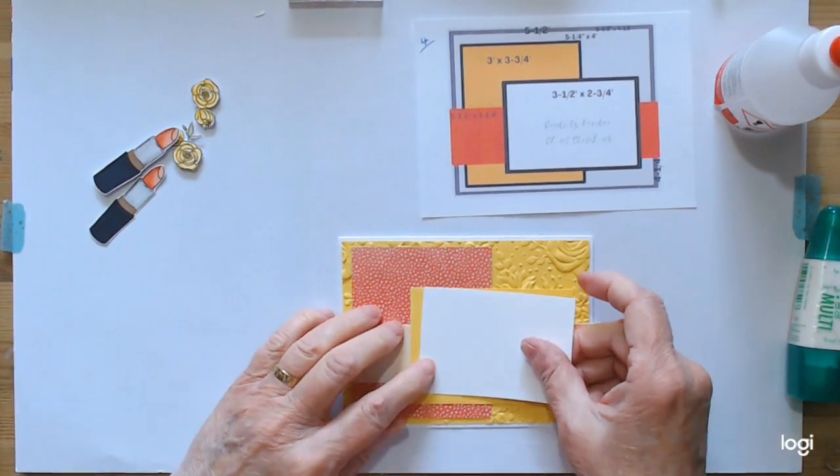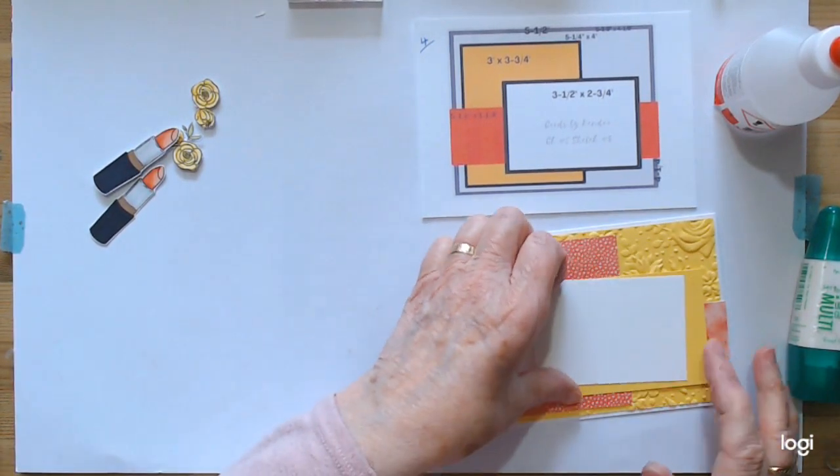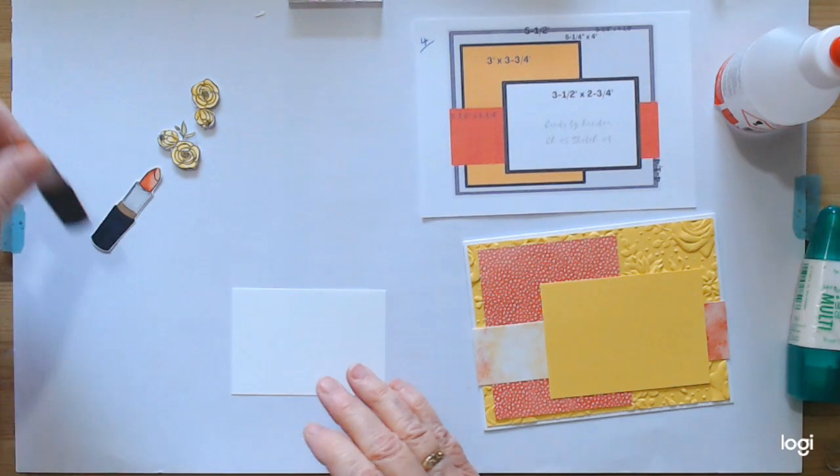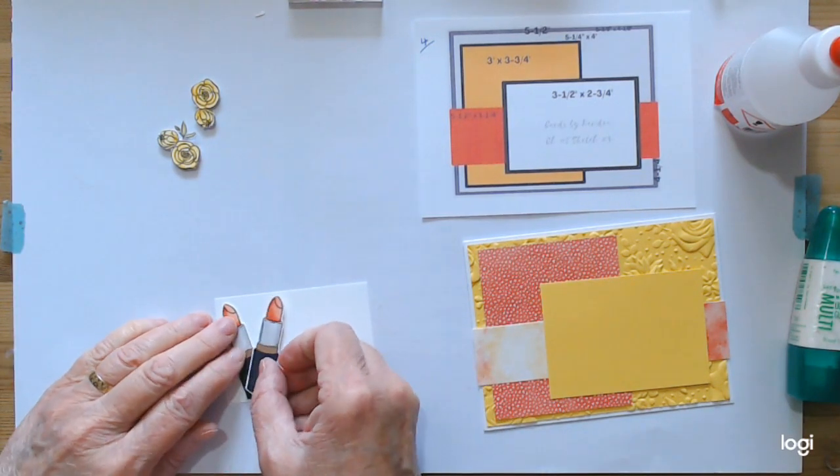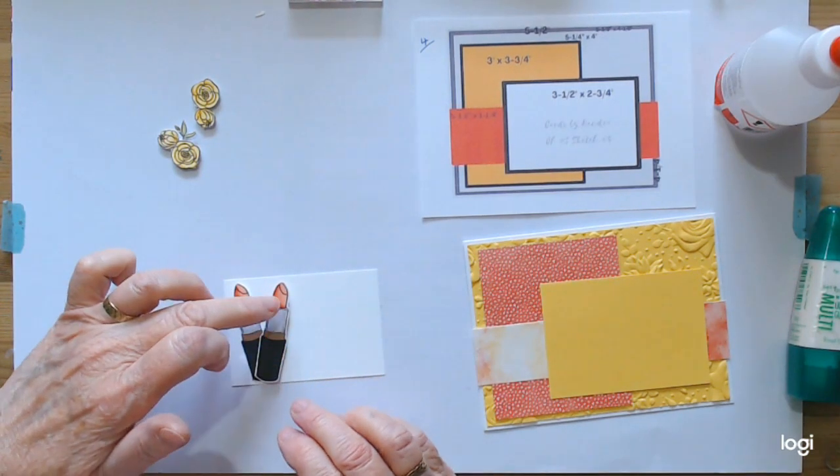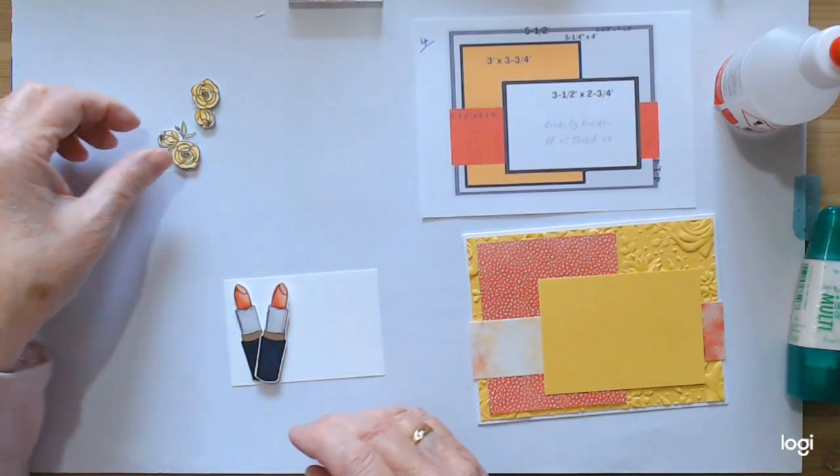So this one is just going to go flat but I want to be able to stamp my sentiment down. So I know these are going to go, one's going to be flat down, one's going to be overlapping the other. I've went with the Calypso Coral to match.